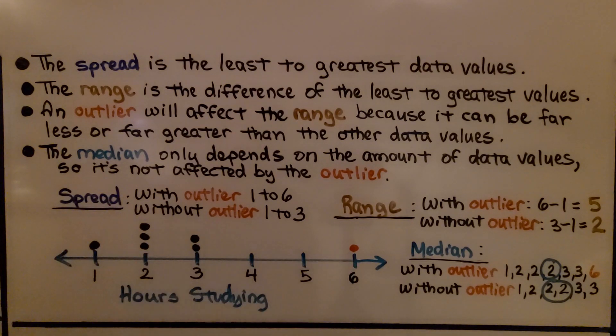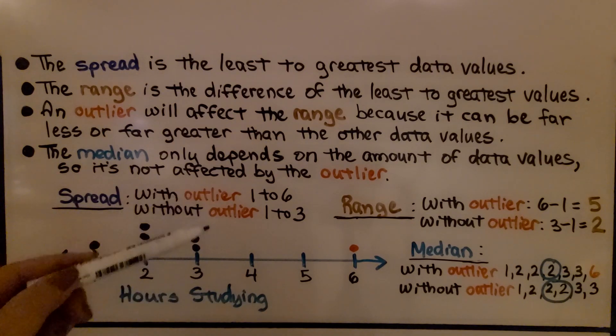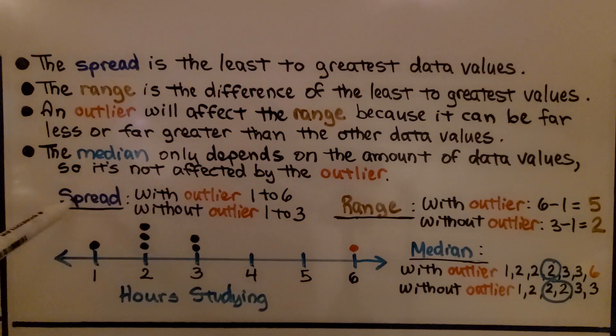With the outlier, we go from one to six. Without it, we go from one to three. We can see the outlier affected the spread.